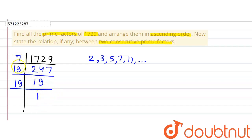So now these are the prime factors of 1729: 7, 13, and 19 are the prime factors.